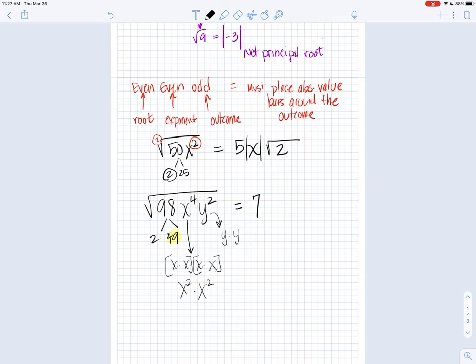The square root of x to the 4th is x squared. I have 2x squared. I take out just the 1x squared. Square root of x to the 4th is x squared, and that is even root, even exponent, even outcome. So I don't need to use my absolute value bars. Remember, the rule is even, even odd.